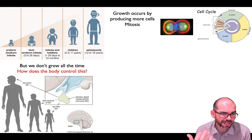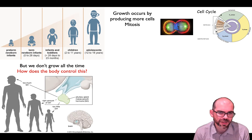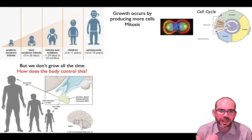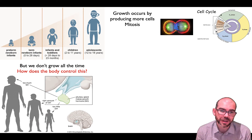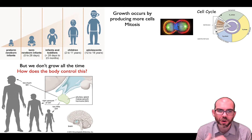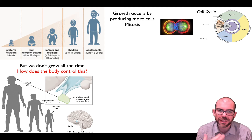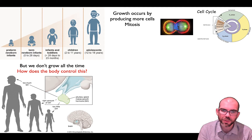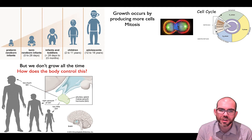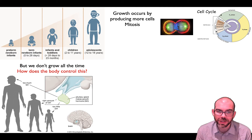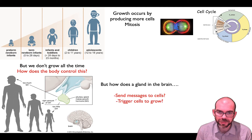In the specific instance of growth, in your brain you have a gland called the pituitary gland. The pituitary gland releases a hormone called growth hormone that can stimulate mitosis in cells. The amount of growth hormone determines how much growing you do. But there's a lot more to this story.